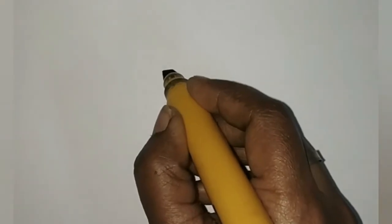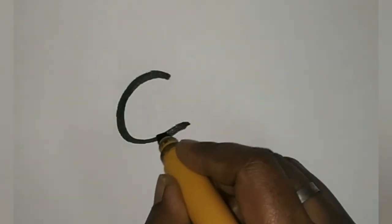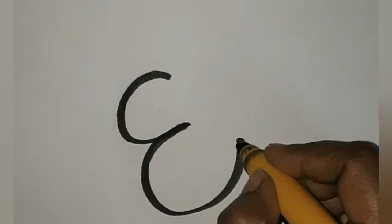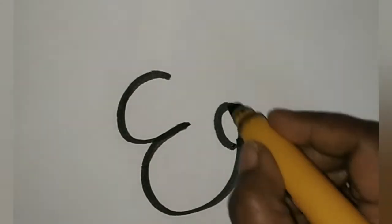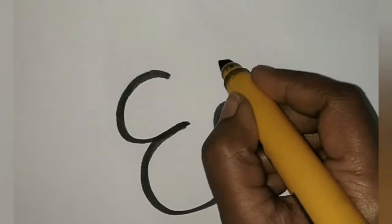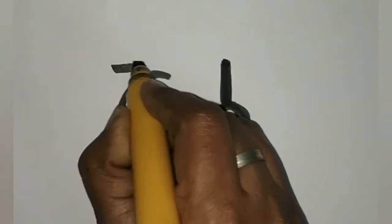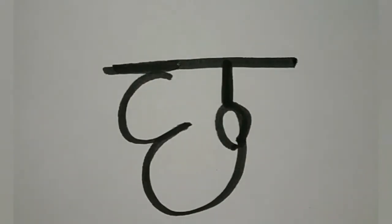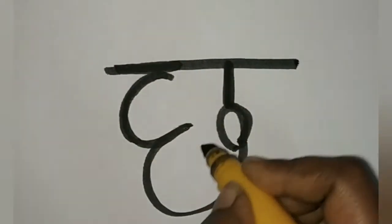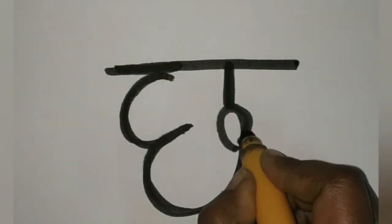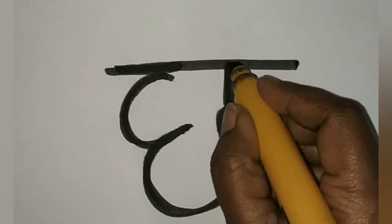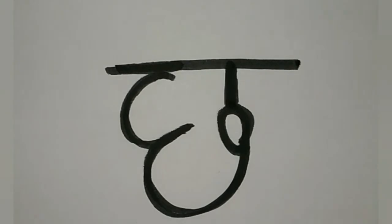Now we will write the next letter. Next letter is Ch. Ch. First, curve line, then curve line. Then this is standing line and then slipping line. Okay? First curve line, curve line, and the curve line, slipping line, then slipping line. Okay? This is Ch.